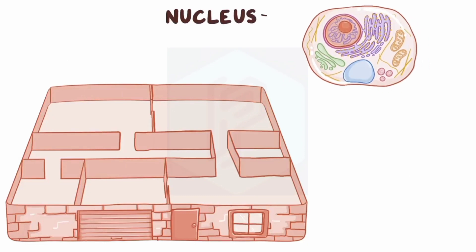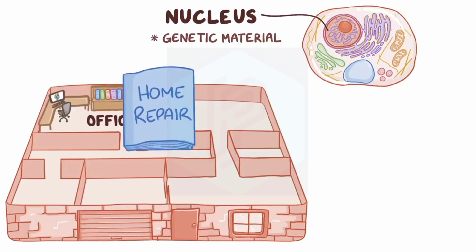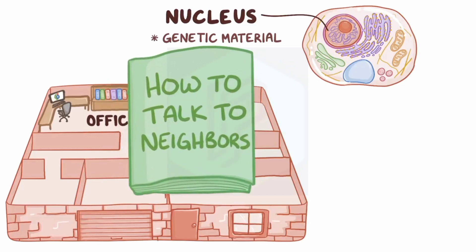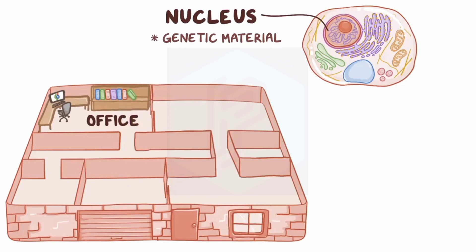The nucleus is a highly specialized organelle and is home to our genetic material. In terms of rooms, you can picture the nucleus as the office, with bookshelves containing various books and manuals — how to do home repair, how to do interior remodeling, how to talk to your neighbors, how to take out the trash, and so on. Extending the analogy, each book would be like a gene that contains the exact information, kind of like a blueprint, that's needed to build a specific protein.